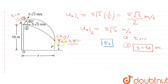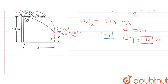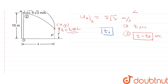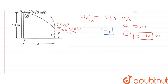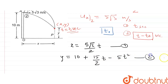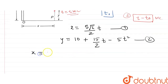Both shots collide at point P(x, y), so for collision their coordinates must be the same at time t. Writing equations in x and y: for shot one, x = (5√3/2)·t. Since the origin is at the foot of the hill and the starting point is 10 meters up, for shot one: y = 10 + (5√3/2)·t − 5t².